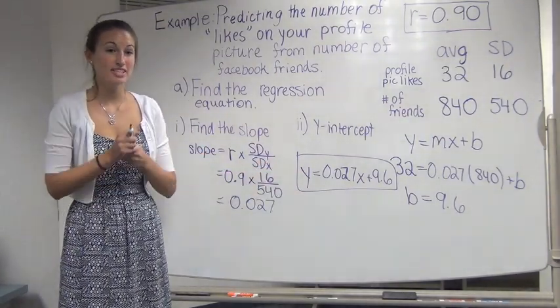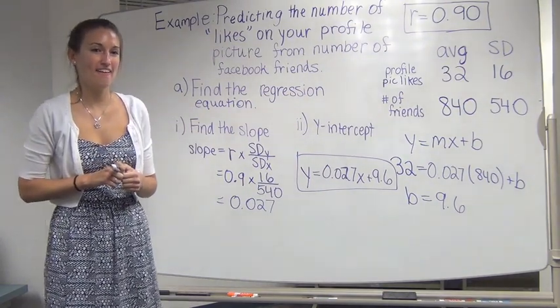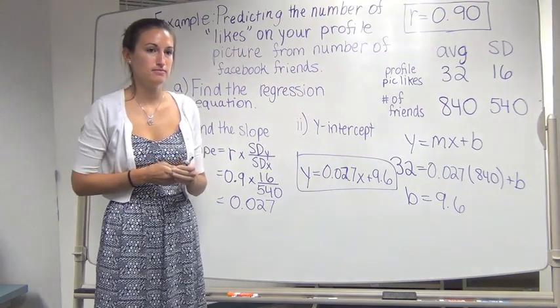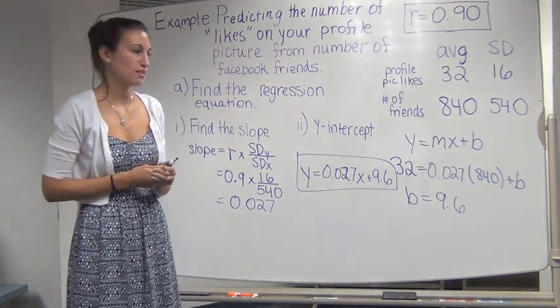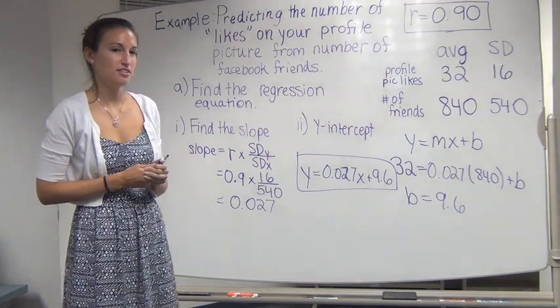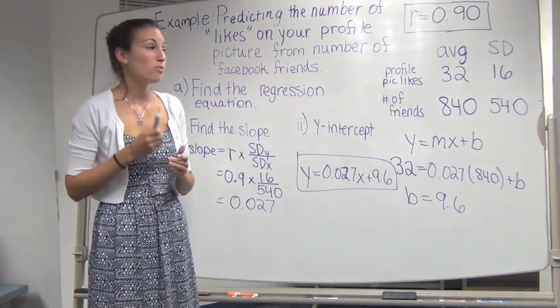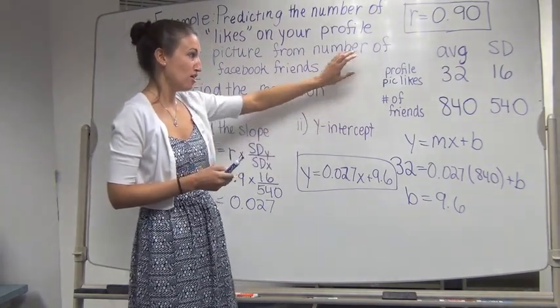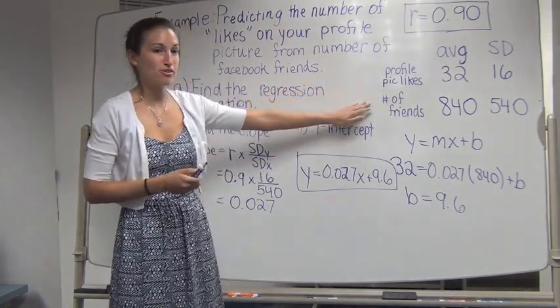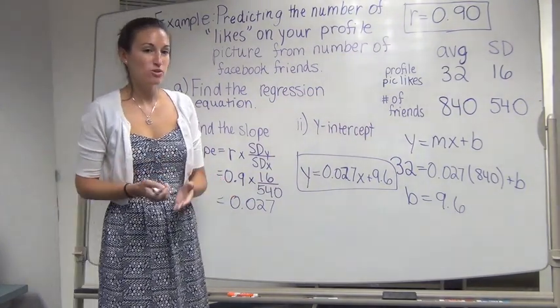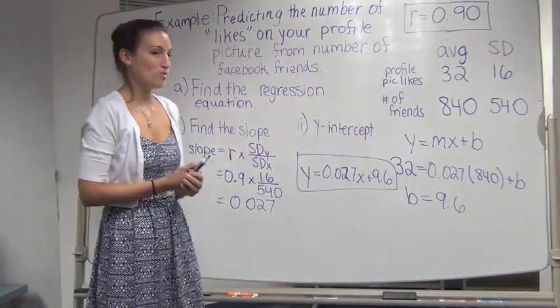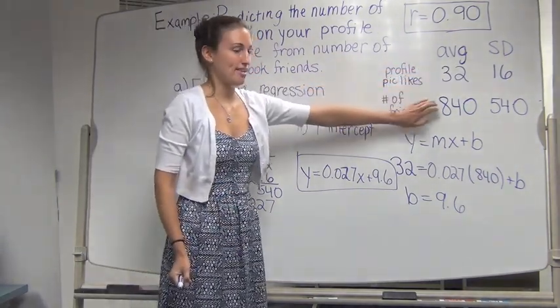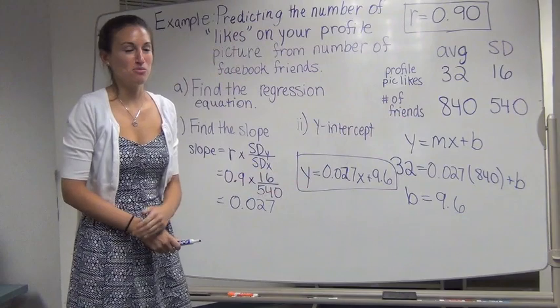I have a question. Yes. So wait a minute, why did we use the point of averages? Wait a minute, is that the only point we know? Right. So here we're not given a list of numbers, the list of observations of the profile picture likes and the number of friends. So when we're not given those lists of numbers, the point that we know is always going to be on the regression line is just the average of y and the average of x, otherwise known as the point of averages.